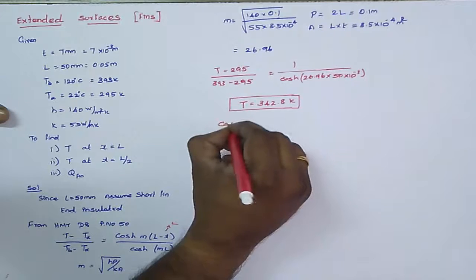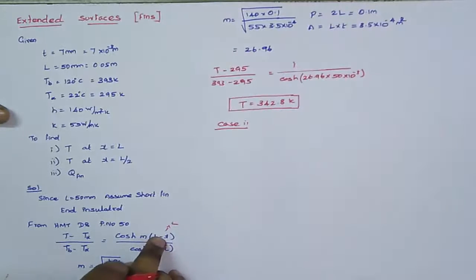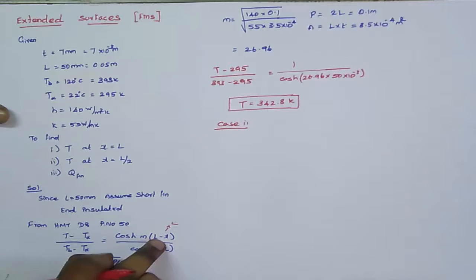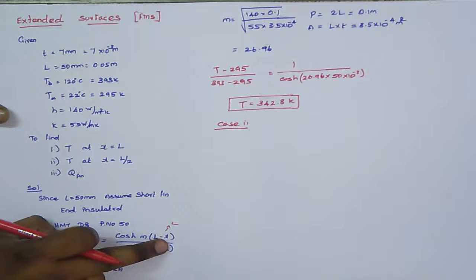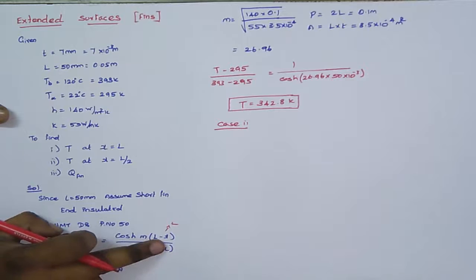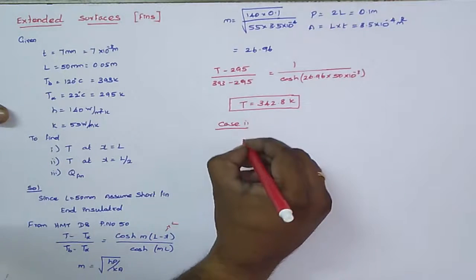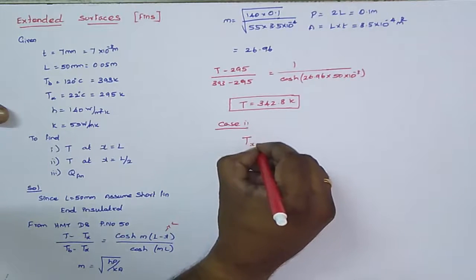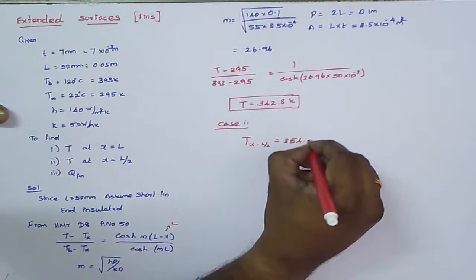For Case 2, take the same equation but substitute X = L/2 = 25 mm = 0.025 m. So L minus X = 50 minus 25 = 25 mm. Substitute M = 26.96 and calculate. The temperature at X = L/2 is 354.04 K.